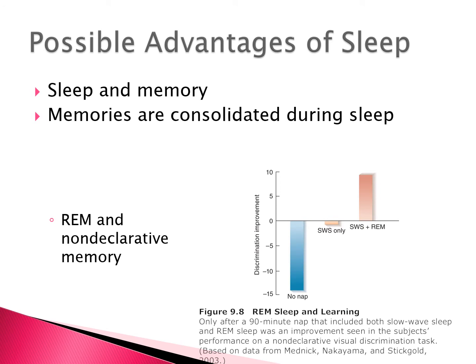Sleep is really important for our memory. REM is important for non-declarative memory. The hippocampus is involved in laying down new explicit or declarative memories — memories we are aware of. We also have non-declarative memories, including procedural memory, where the basal ganglia is particularly important. This includes finding patterns in things we're not fully aware of, such as a non-declarative visual discrimination task.